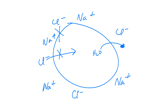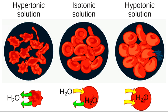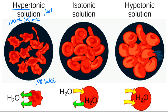Let's look at examples with red blood cells placed in three different solutions. The first on the left is a hypertonic solution. Hypertonic means more solute — like a hyperactive child has more energy, a hypertonic solution has more solute than the cell. Red blood cells have a salt concentration of about 0.9%, so a hypertonic solution would have more than that — say about 10% salt concentration.